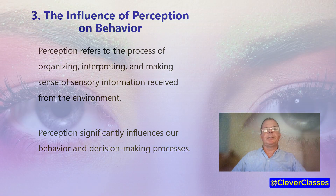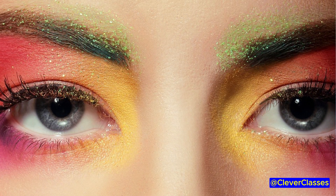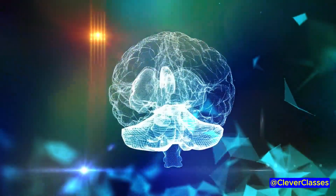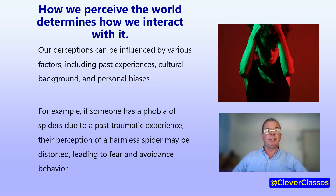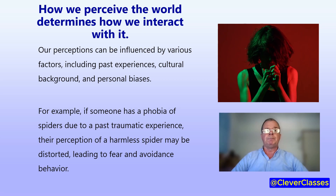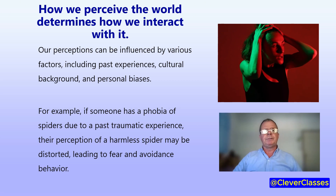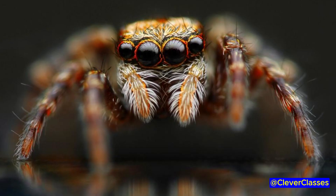The influence of perception on our behaviour. Perception refers to the process of organising, interpreting and making sense of sensory information received from the environment. Perception significantly influences our behaviour and decision-making processes. Our perceptions can be influenced by various factors, including past experiences, cultural background and personal biases. For example, if someone has a phobia of spiders due to a past traumatic experience, their perception of a harmless spider may be distorted, leading to fear and avoidance behaviour.